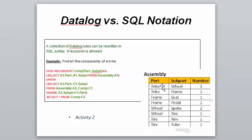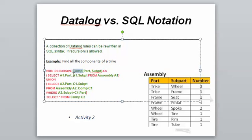Here we're defining the table 'comp_part' for the table 'assembly'. For a trike, you need a frame, and a frame can have other parts. For a wheel you can have certain sub-parts, and for a tire you can have others. So there are parts that are sub-parts of parts — for example, for a trike queried in a traditional way you'd only get the direct sub-parts, but recursion lets you get all sub-parts.